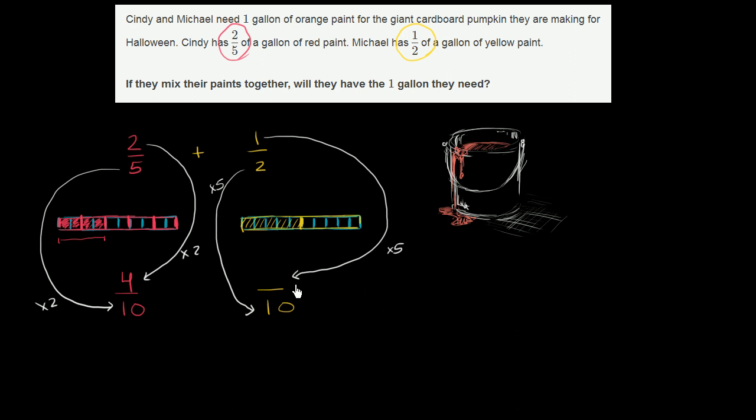Otherwise, we're changing the value of the fraction. So 1 times 5 is going to get you to 5. And you see that over here when we shaded it in. That one-half, if you look at the tenths, is equal to 1, 2, 3, 4, 5 tenths.